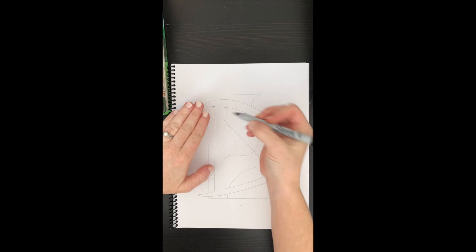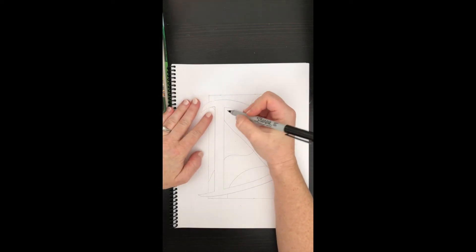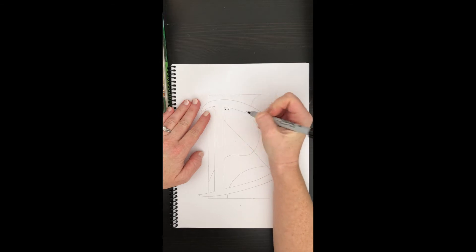For this design, what I'm going to do is around the perimeter of this one section, I'm going to make some little half-moon shapes.